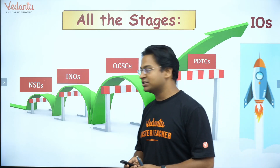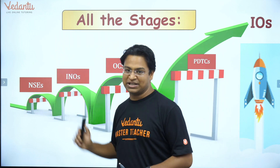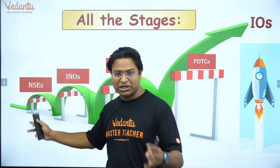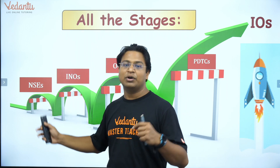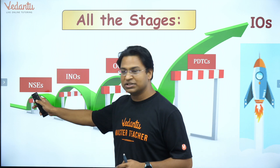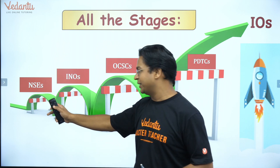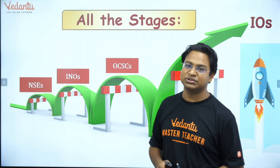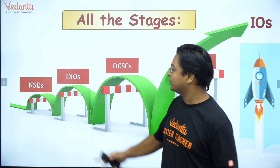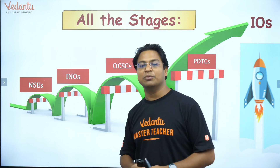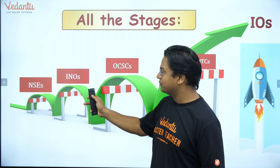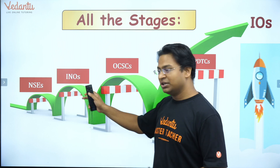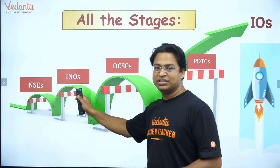The first stage is the National Standard Exam, which is conducted in Physics, Chemistry, Biology, and Astronomy. If you want to appear in the olympiad of any subject, this is the first step — except for Maths Olympiad. From this exam, about 300 students are shortlisted and they go on to write the next stage, which is the Indian National Olympiad — Indian National Physics Olympiad, Indian National Chemistry Olympiad, and similarly for Astronomy and Biology.